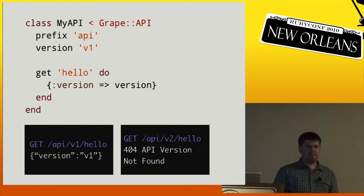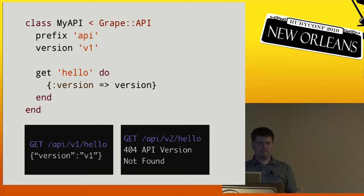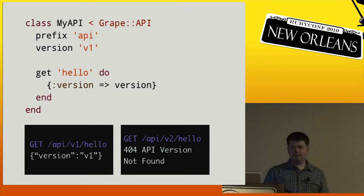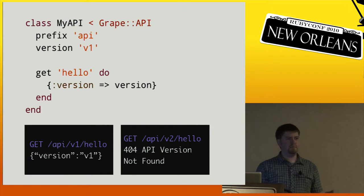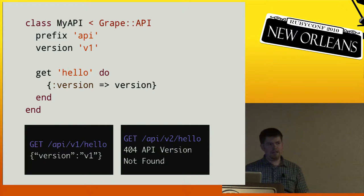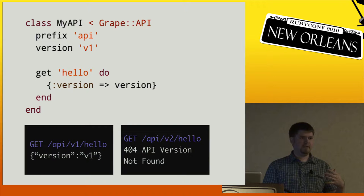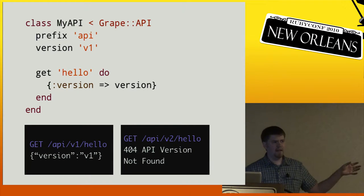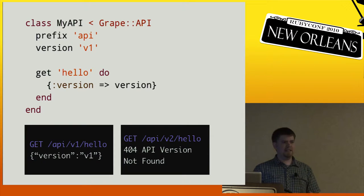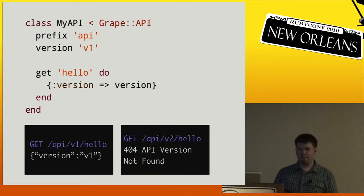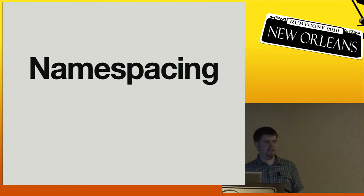You can do versioning, and this is an interesting one. You specify a specific version and if you specify a prefix and a version, the version will go after the prefix. You can also specify multiple versions in that argument — version v1, v2 — and those methods are available for both versions. If you want something to be only available for a certain version, you can pass a block to the version directive, which creates an encapsulated segment of code that works only for those specified versions. So you can easily do legacy support.